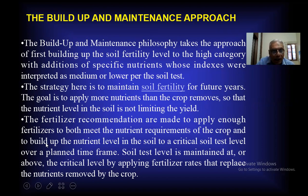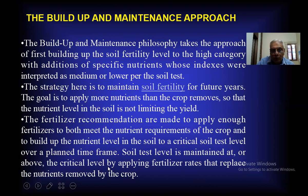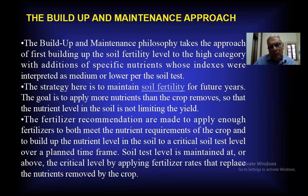The fertilizer recommendations are made to apply enough fertilizer to both meet the nutrient requirement of the crop and to build up the nutrient level in the soil to a critical soil test level over a planned time frame. For future years, the soil test level is maintained at or above the critical level by applying fertilizer rates that replace the nutrients removed by the crops. We have to consider the nutrient removed by the crops plus add extra nutrients so there is no possibility of falling below the critical soil test limit.